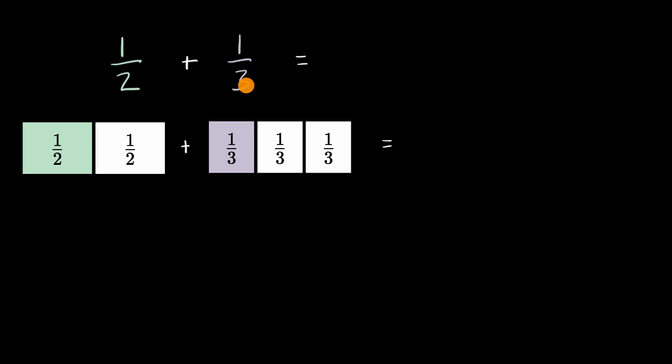Well, we try to set up a common denominator. Now, what do we mean by a common denominator? Well, what if we could express this quantity and this quantity in terms of some other denominator? And a good way to think about it is, is there a multiple of two and three?